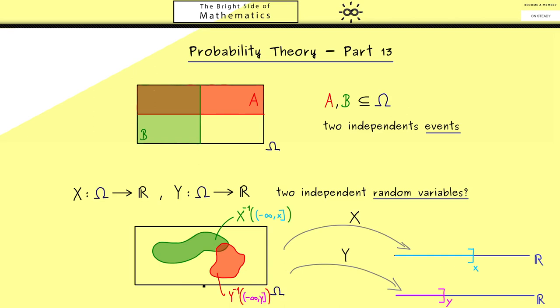So in summary, by looking at the pre-images of all these intervals, we find a whole collection of events here. And in the case that each pair of events, one from the sigma algebra generated by X and the other one from the sigma algebra generated by Y, is independent by the definition above, then we call the two random variables X and Y independent.